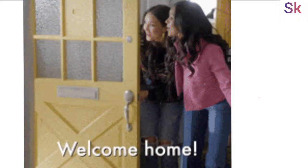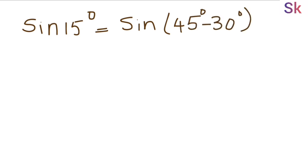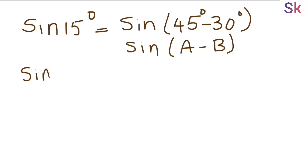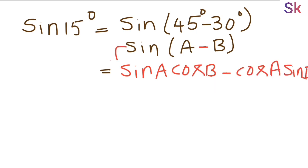Welcome to my channel. Today we are going to find the trigonometric value sin 15 degrees. We can write this as sin(45 minus 30). Now we have to use the complementary formula — it is in the form of sin(A minus B). The formula for sin(A minus B) is sin A cos B minus cos A sin B.